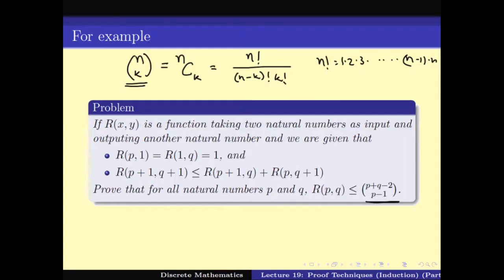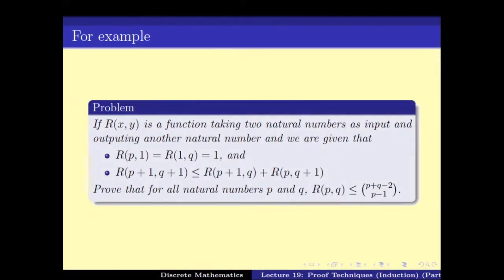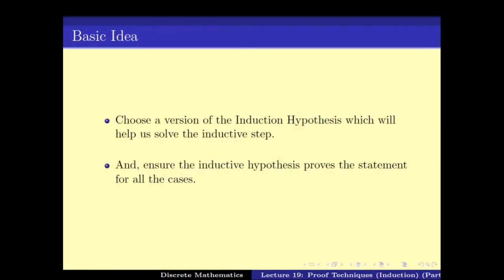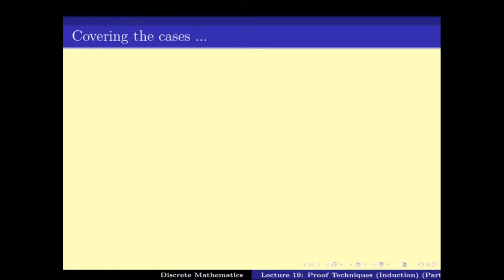As we can see, there are two different parameters here, namely p and q. Which one do you induct on, or in other words, which one do you use to split up the problem into cases? For solving any problem in induction, the basic idea is: choose a version of the induction hypothesis which will help us solve the inductive step, and we also have to ensure that the inductive step proves all the cases.